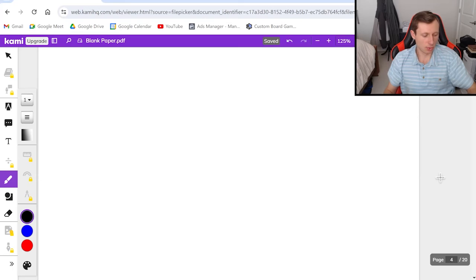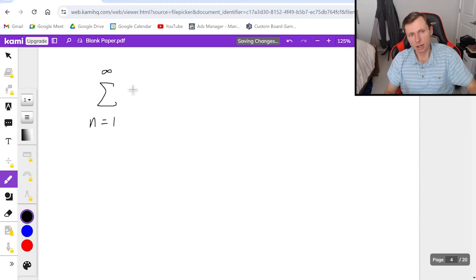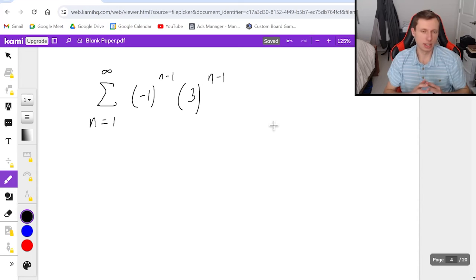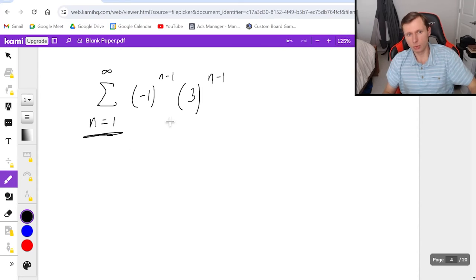Now for the second one, I have the series from n equals one to infinity of negative one to the n minus one times three to the n minus one. So if you're stuck on this one, I'm going to help you. First of all, I see I'm starting at one, which means the fact that I have the n minus one form is good. But I have two different terms here. Whenever I have two different terms with n in it, I need to combine them for geometric series. Luckily, whenever the exponents are the same, I can combine them.